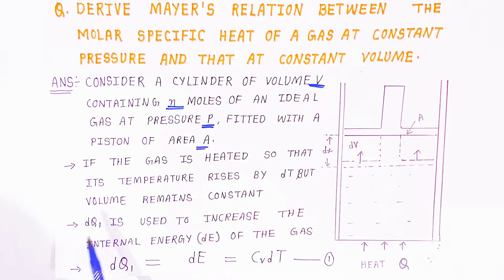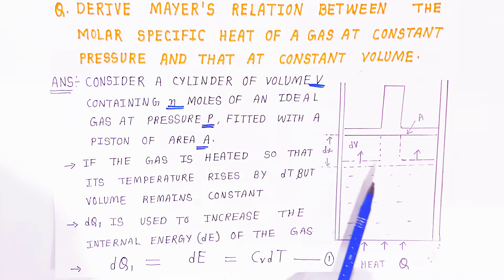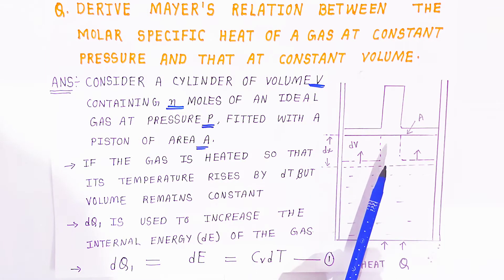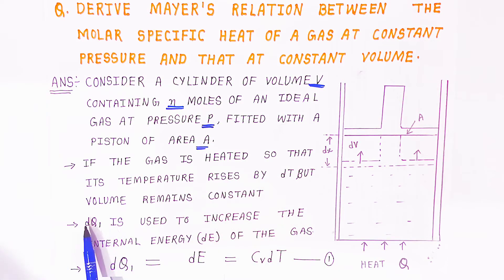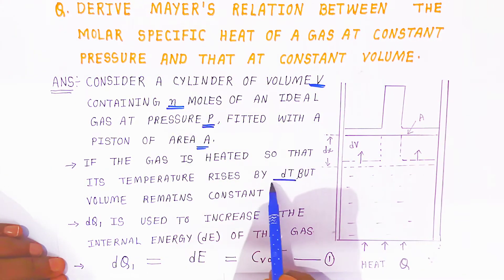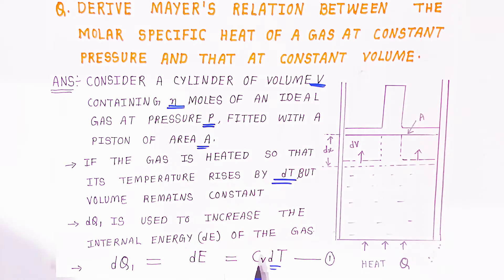Only the internal energy of the gas molecules will increase; the piston will not move. At constant volume, whatever heat dQ is supplied is utilized to increase the internal energy. This can be written as dQ1 = nCv·dT, where Cv is the molar specific heat at constant volume. So the change in internal energy dE = Cv·dT.